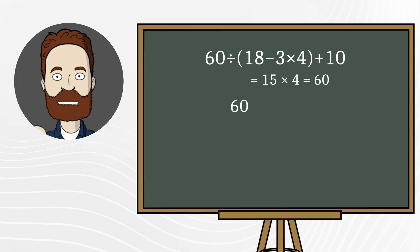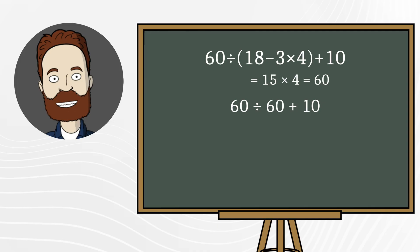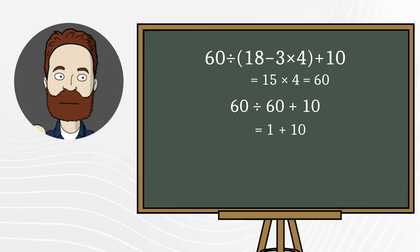Now we have 60 divided by 60 plus 10. Next, 60 divided by 60, we get 1. And finally, 1 plus 10, we get 11.